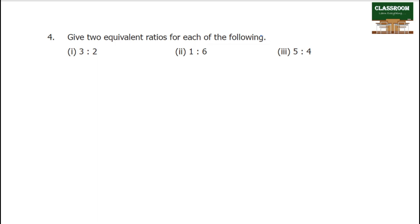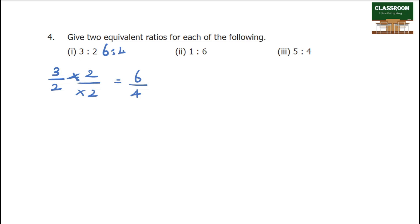Give two equivalent ratios for each of the following. For 3 by 2: multiply by 2 — three 2s are 6, so 6 is to 4. Multiply by 3 — three 3s are 9, two 3s are 6, so 9 is to 6. Second example: 1 by 6. Multiply by 2: two 2s. Next ratio is 9 is to 6.